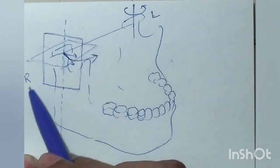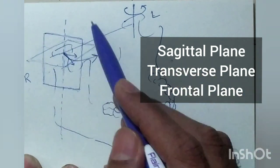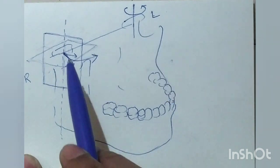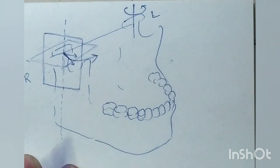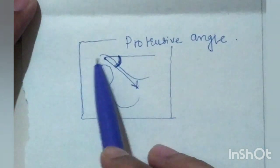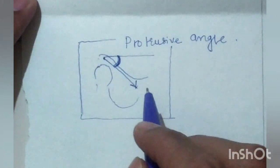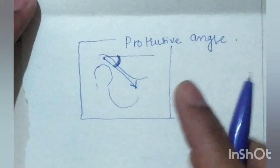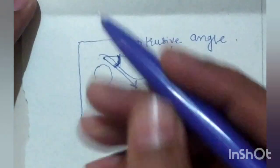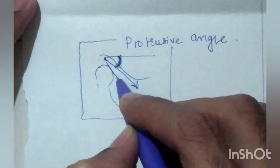The non-working condyle produces three types of movements in three planes: the sagittal plane, the transverse plane, and the frontal plane. In the sagittal plane, the condyle moves along the articular eminence. If the condyle were only protruding, this would be the protrusive angle.